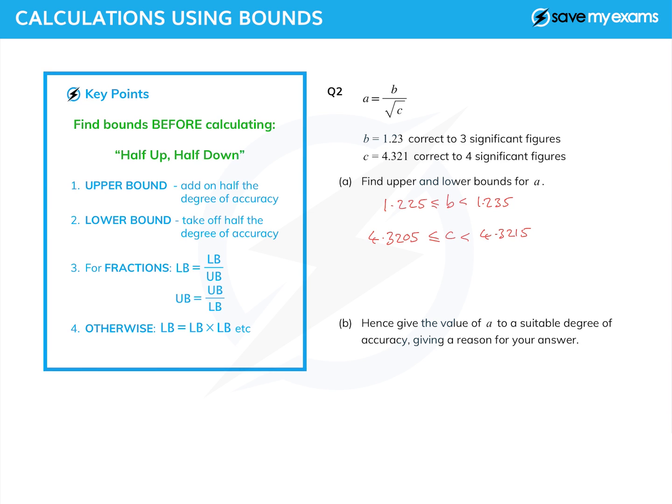Now the upper bound of a—now remember what we said over here: the upper bound of a fraction is the upper bound of the top over the lower bound of the bottom. So we're going to use the upper bound on the top, and that is going to be the upper bound of b, which is 1.235, and then the square root of the lower bound of c, 4.3205.